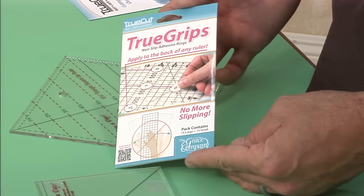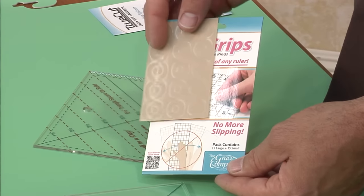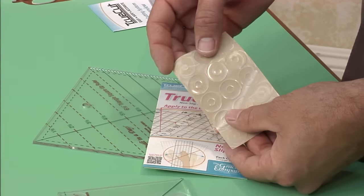TrueGrips comes in a package like this. It comes with 15 large circles and 15 small circles and all you do is peel them off of this adhesive backing.